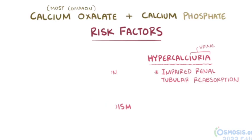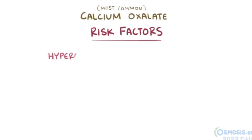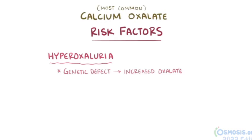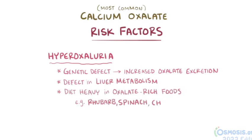For the calcium oxalate stones, hyperoxaluria is a risk factor as well, and it can be due to a genetic defect that increases oxalate excretion, a defect in liver metabolism, or a diet heavy in oxalate-rich foods like rhubarb, spinach, chocolate, nuts, and beer.